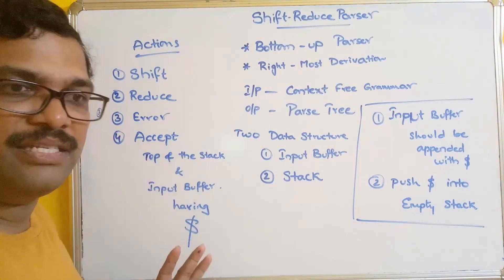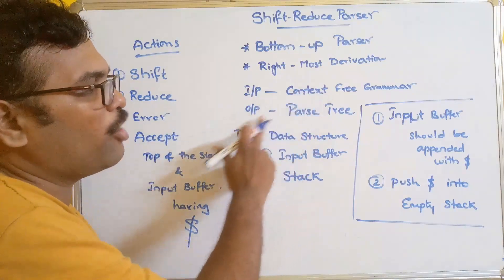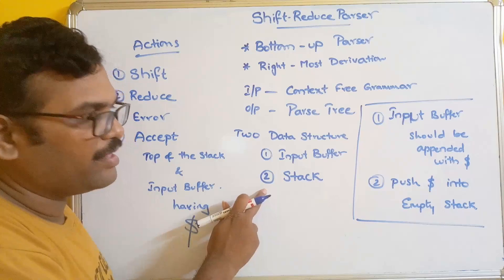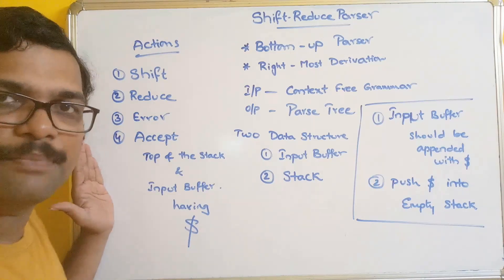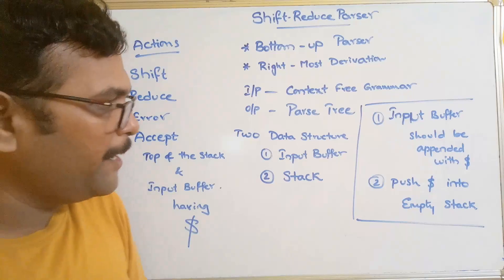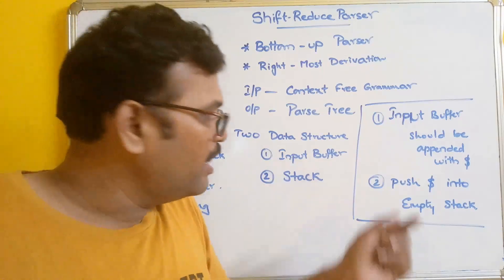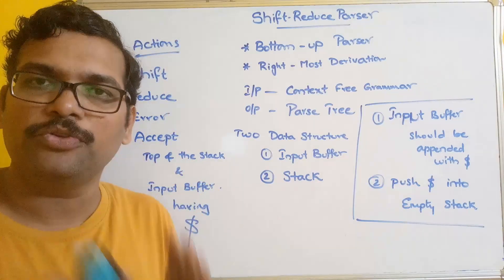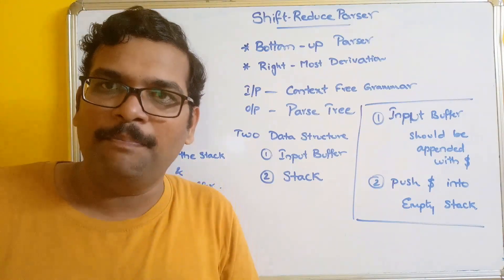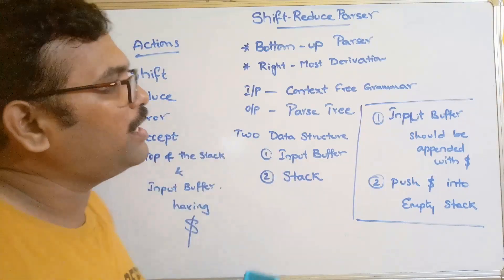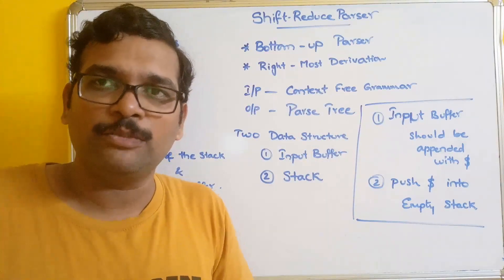To summarize: the shift reduce parser is a bottom-up parser that uses rightmost derivation. The input is a context free grammar and the output is a parse tree. It uses two data structures — input buffer and stack — and performs four actions: shift, reduce, error, and accept. Before parsing, append dollar to the input string and push dollar into the empty stack. Now let us take an example and parse an input string.